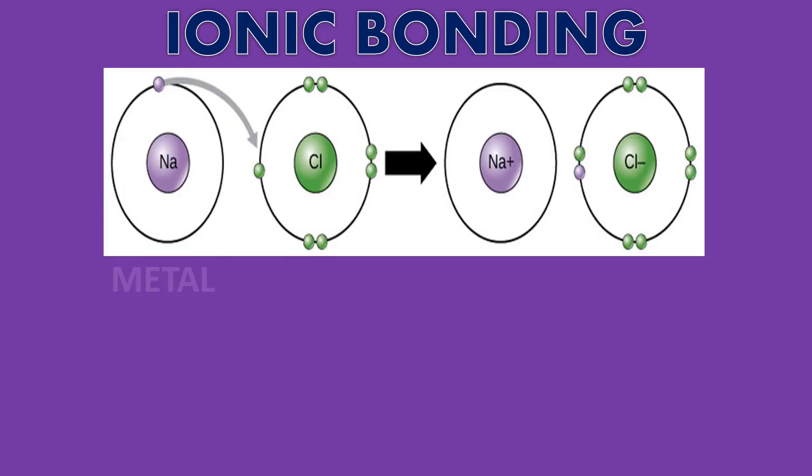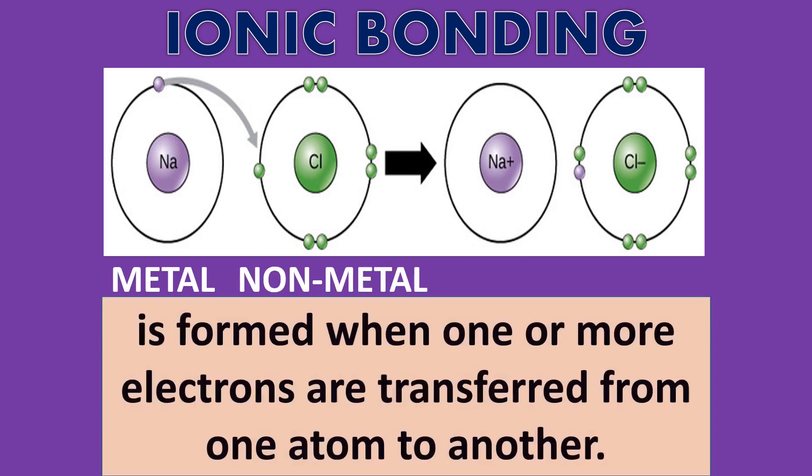Ionic bonding is when a metal combines with a non-metal. It is formed when one or more electrons are transferred from one atom to another.